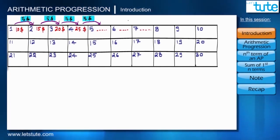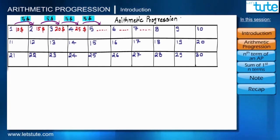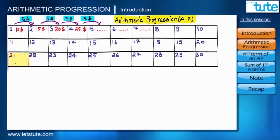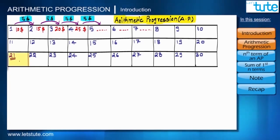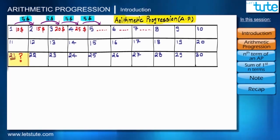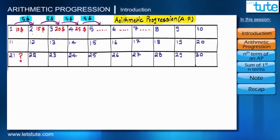Since we are dealing with numbers, such a pattern is called an arithmetic progression, with short form AP. On 21st November, that is on the 21st day, it's my friend's birthday and I want to find out exactly how much payment I would get on that day so I can buy a gift for him. But adding $5 to each previous payment seems quite lengthy.